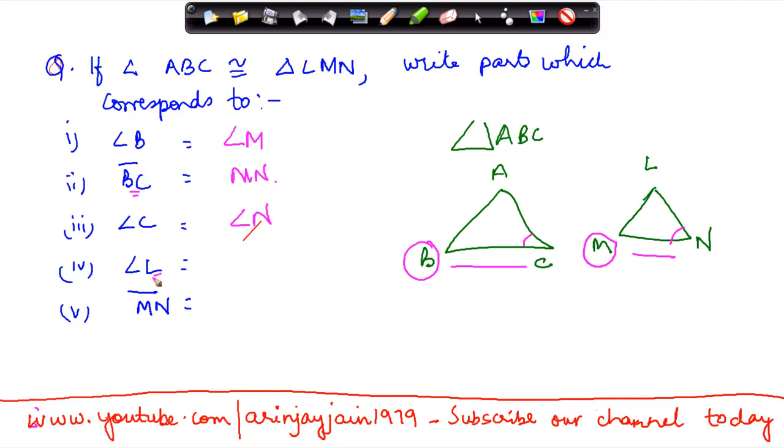The next one is angle L. Now angle L is on the top, angle A is on the top here, so we will have it angle A. And then we have line MN. MN is here, right? Similarly you have BC here.